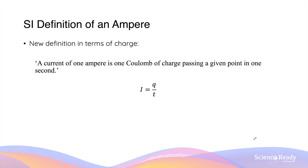The new SI definition of an ampere is simpler and defined in terms of charge: a current of 1 ampere is 1 coulomb of charge passing through a given point in 1 second, described by the simple equation we learned previously.